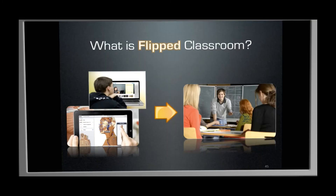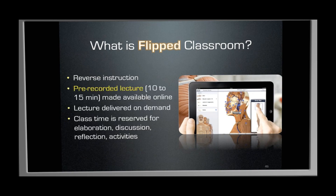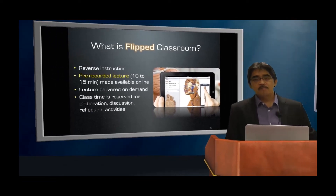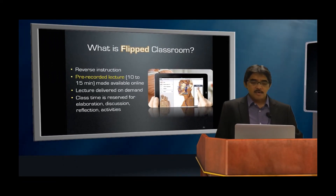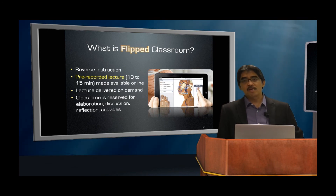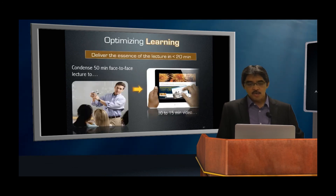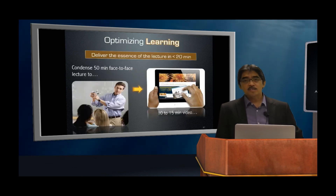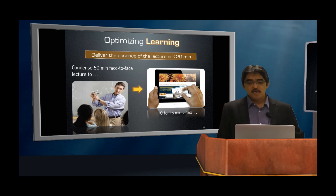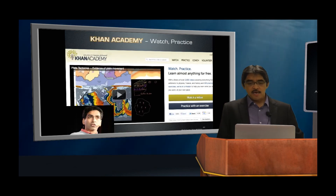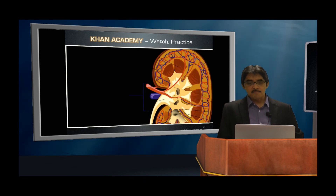Flip Learning is another way of engaging students — we provide content online and require students to study it before the classroom. When we come to the classroom, we use that time to do a lot of activities. We deliver the essence of the lecture in about 10 minutes or less and make it available online so students can access it on their tablet or phone. Another example is Khan Academy.